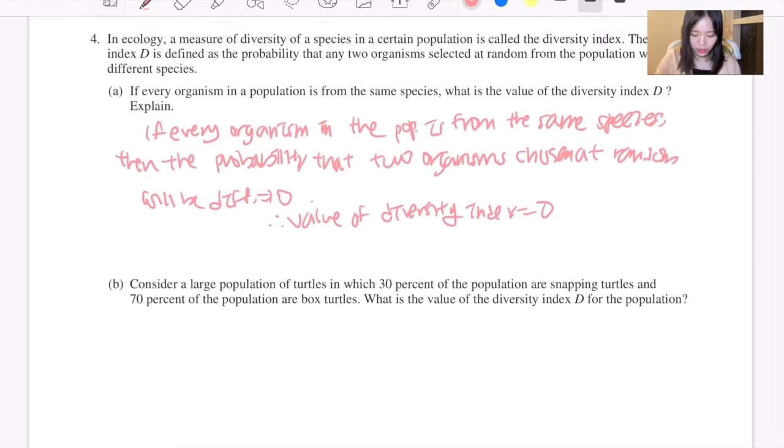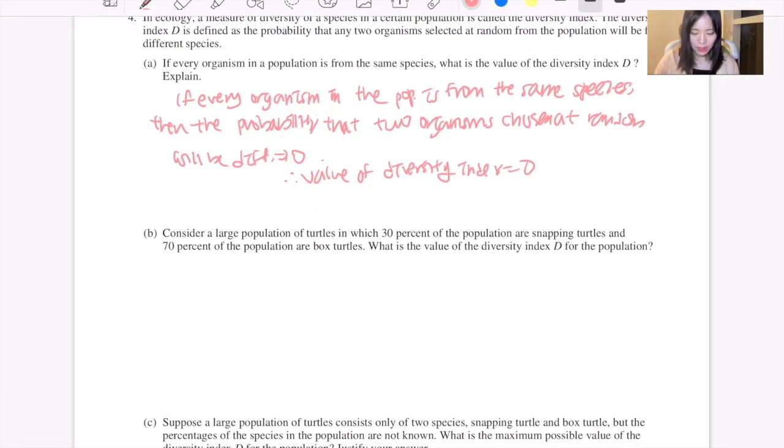Part B: Consider a large population of turtles in which 30% of the population are snapping turtles and 70% of the population are box turtles. What is the value of the diversity index D for the population?